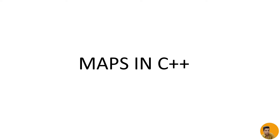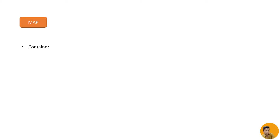Hey everyone, this is Devanshi Kisruvani and welcome to my channel CodeDisk. Today we will see maps in C++. These are containers which are very useful when solving a key-value pair problem. So let's see from the very basic what a map is. It is a container just like your array or vector — also a container defined in the C++ STL container part.